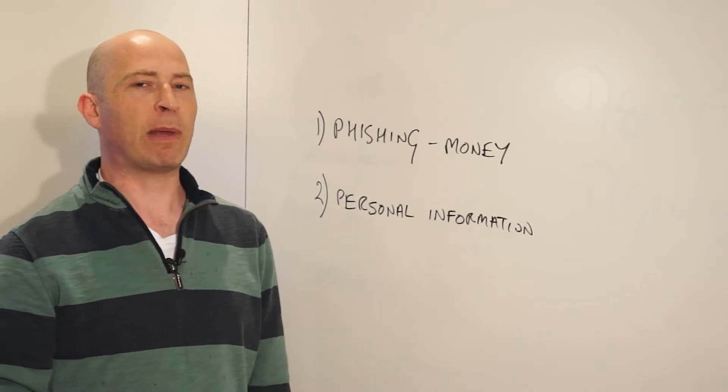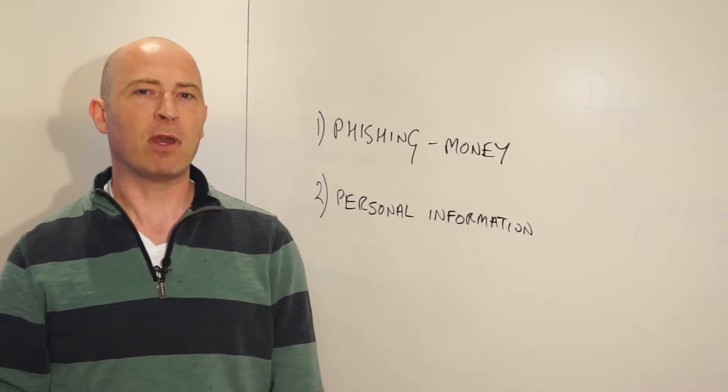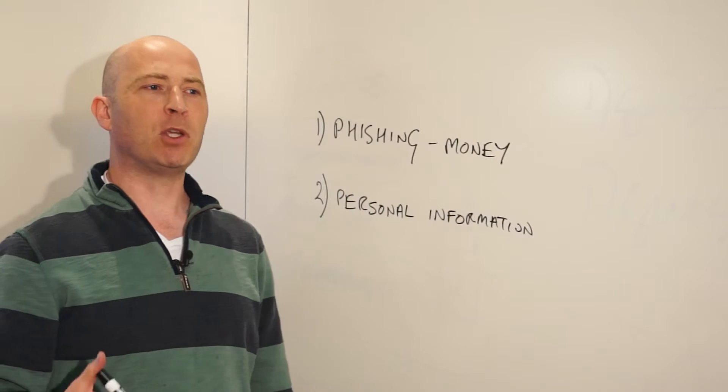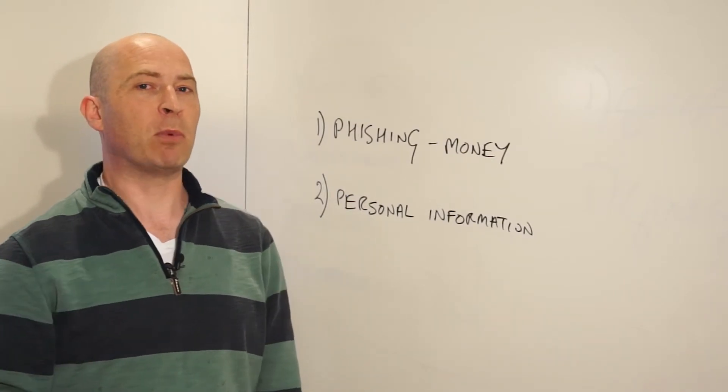All of this information about your name, your age, your social security number, where you live, what kind of habits you have, what magazines do you read, do you have health insurance, do you smoke? These can all be used and sold on to people.